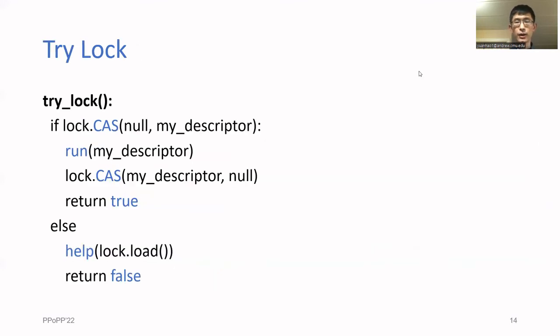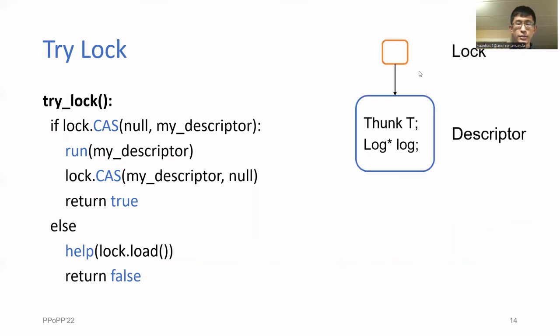Next, I'll talk about the tryLock algorithm. At a high level, each lock stores a pointer to a descriptor. Each descriptor stores a pointer to a log and also a pointer to a thunk.